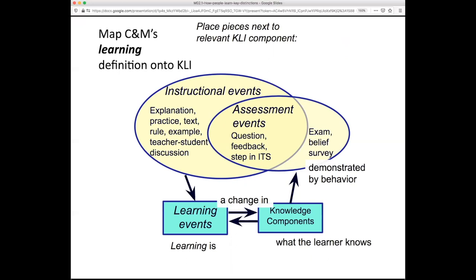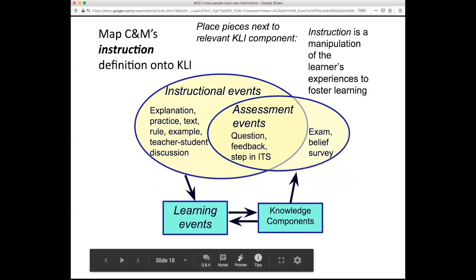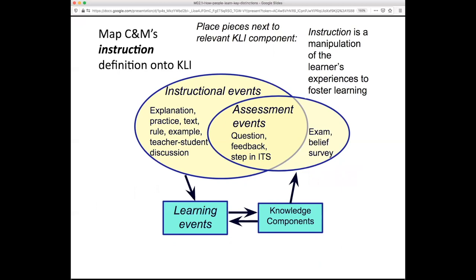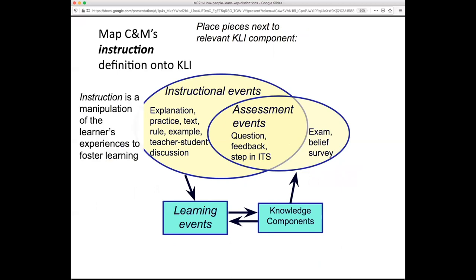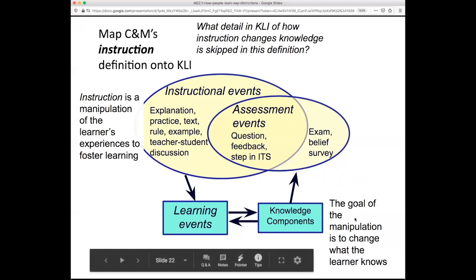We can give a belief survey. 'Change is caused by the learner's experience' — where is the learner's experience? That's what's happening as students interact with a learning environment of some kind. How about instruction? Instruction is a manipulation of the learner's experience to foster learning — that's over here. The goal of the manipulation is to change what the learner knows — that's down here. So in the definition of instruction, there's a jump from what we do to the knowledge that's created.